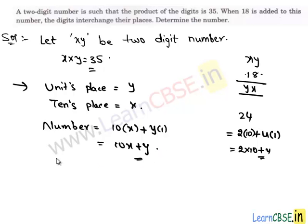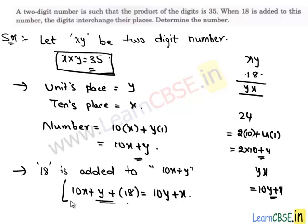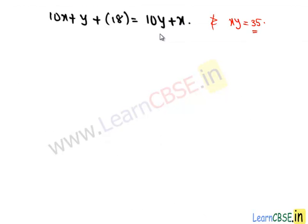Now we add 18 to this number. When we add 18 to this number, the digits are interchanged. Then we get the number y, x. And we can write y, x as 10 times y plus x, since y is in ten's place and x is in units place. So it is equal to 10 times y plus x. Now we simplify this equation for any of these values. And we have two conditions, which is the product of two digits is x, y and we get this equation.